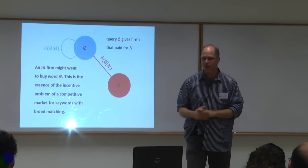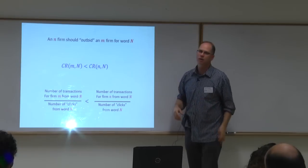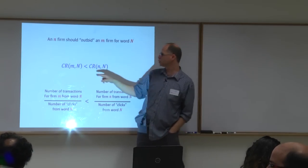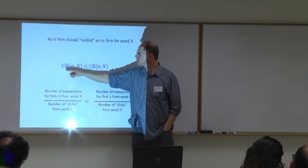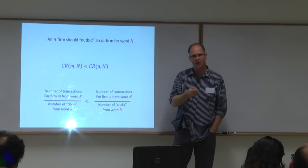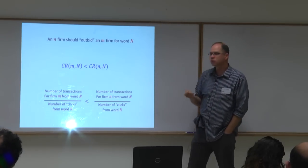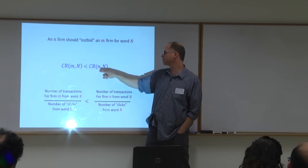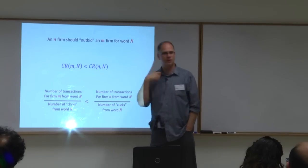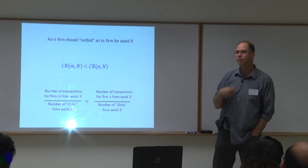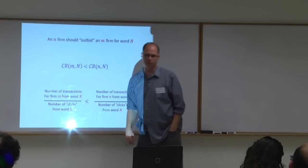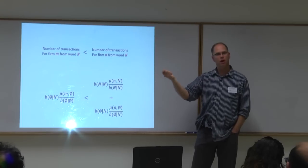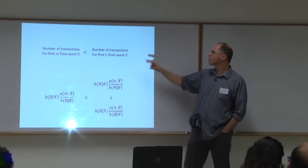You want the N firms to have a higher willingness to pay for word N than M firms do. Since price is per click, conversion rate equals willingness to pay. You need the conversion rate of M firms from word N to be lower than the conversion rate of N firms from word N. The denominator is the same for both product types, so you need to ensure an M firm paying for word N gets fewer transactions than an N firm.